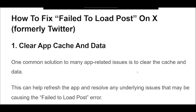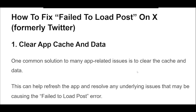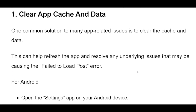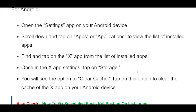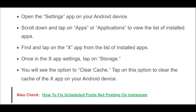For Android, open the Settings app on your Android device. Scroll down and tap on Apps or Applications to view the list of installed apps. Find and tap on the X app from the list. Once in the X app settings, tap on Storage. You will see the option to clear cache. Tap on this option to clear the cache of the X app.